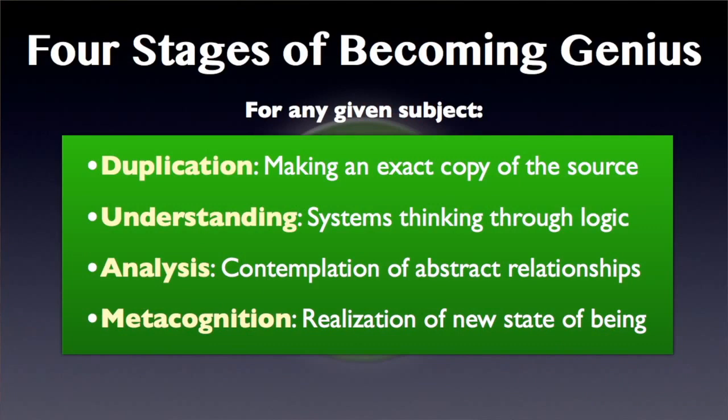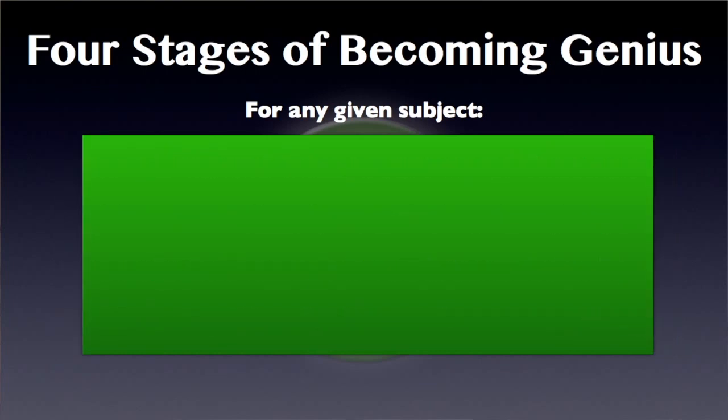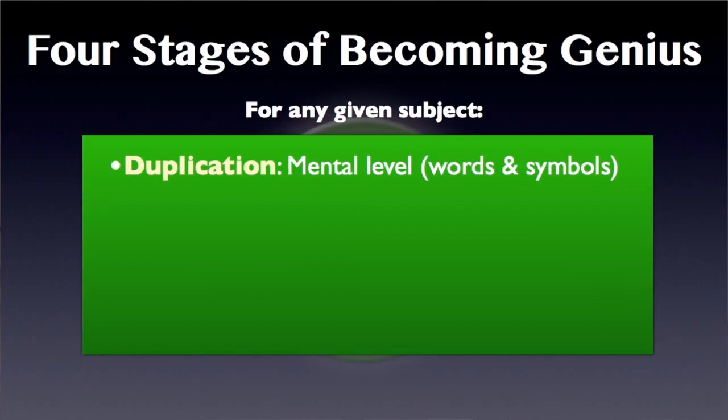Now I'd like to look at these same four stages from another point of view, again for any given subject. Duplication is on the mental level — the level of words and symbols. Here I am talking to you, you're hearing my words, decoding those words, and getting an idea of what I'm saying just by words and symbols. That is an absolute necessity. If you don't duplicate — if you make a wrong or imperfect or partial copy of a piece of knowledge — you're not thinking with all the information, you're not firing on all cylinders, and you're going to get some different result. So you have to start from a perfect copy: duplication.